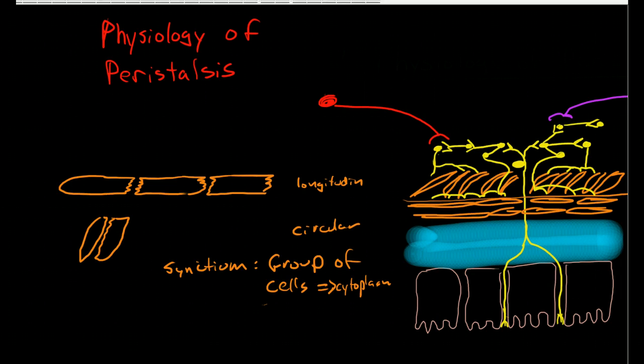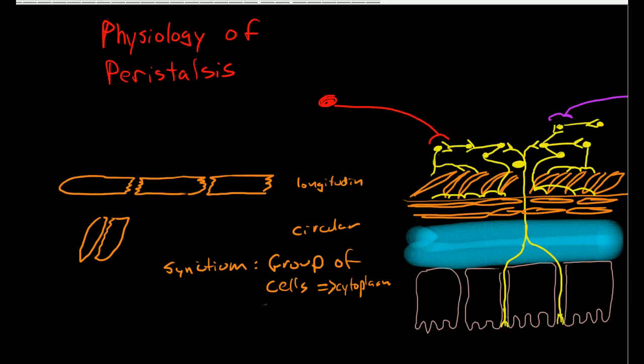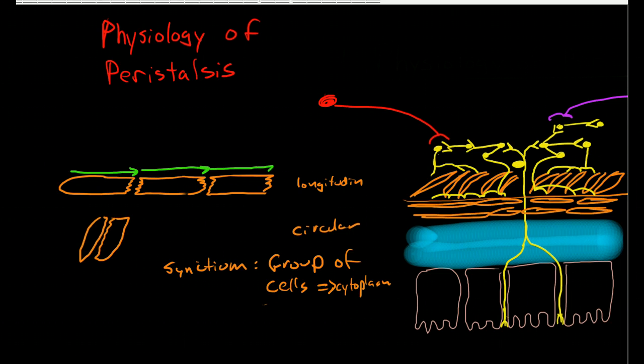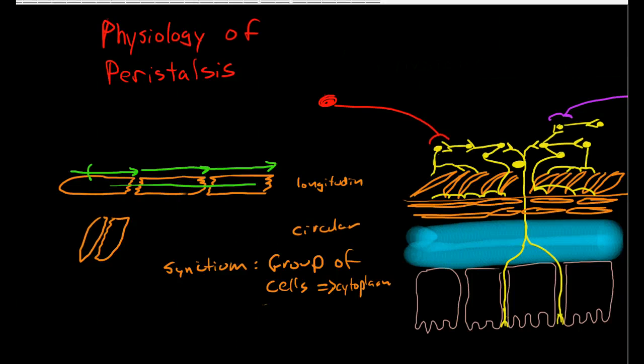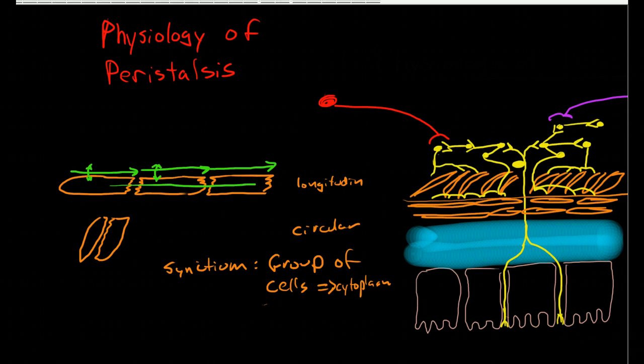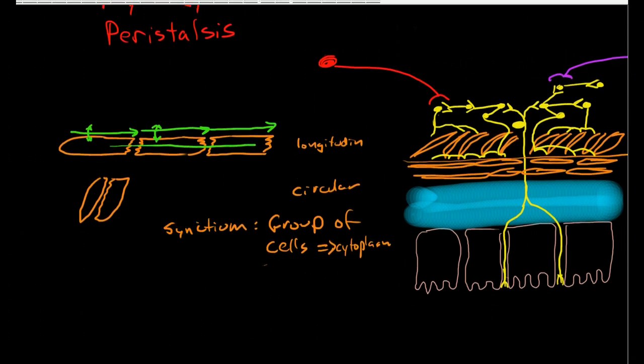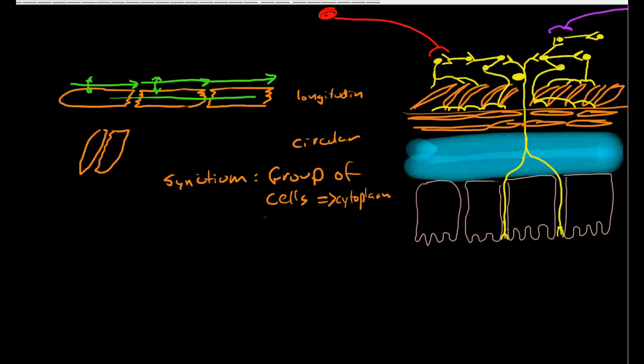This is important when we talk about action potentials because if we have an action potential it can spread from cell to cell without stopping. It shares the cytoplasm and electrolytes can move freely from cell to cell, so if there is a wave of ion exchange occurring it passes easily from cell to cell.